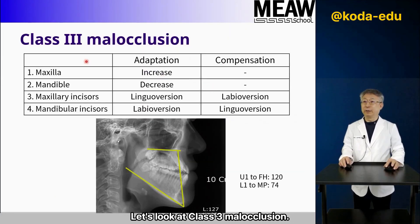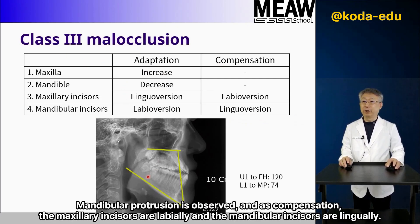Let's look at Class 3 malocclusion. Mandibular protrusion is observed, and as compensation, the maxillary incisors are inclined labially and the mandibular incisors are inclined lingually.